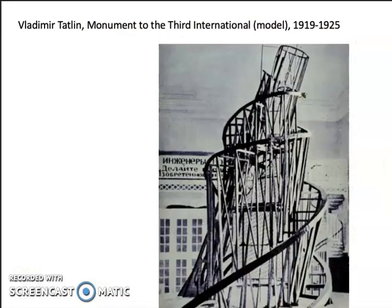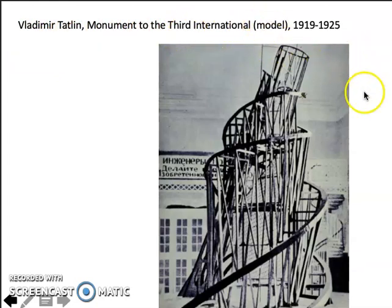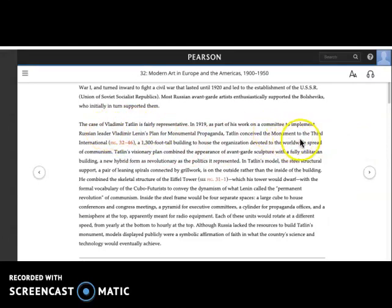But in terms of art, this is an incredibly momentous event. The most dramatic and immediate response is by Tatlin, and it is called the Monument to the Third International. It's a model because this wonderful, incredible design never gets realized. Tatlin receives the commission to commemorate the Third International, which was the third international meeting of the Communist Party, and this building will house the umbrella organization devoted to the worldwide spread of communism.